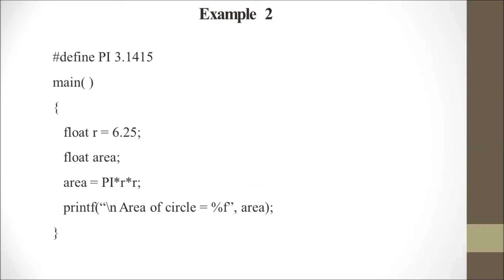Another example defines #define PI 3.1415. We declare float r = 6.25 and float area. Then area = PI * r * r, which is the formula for circle area. Instead of writing 3.1415, we use PI and the value is substituted automatically. The calculated area is then printed.